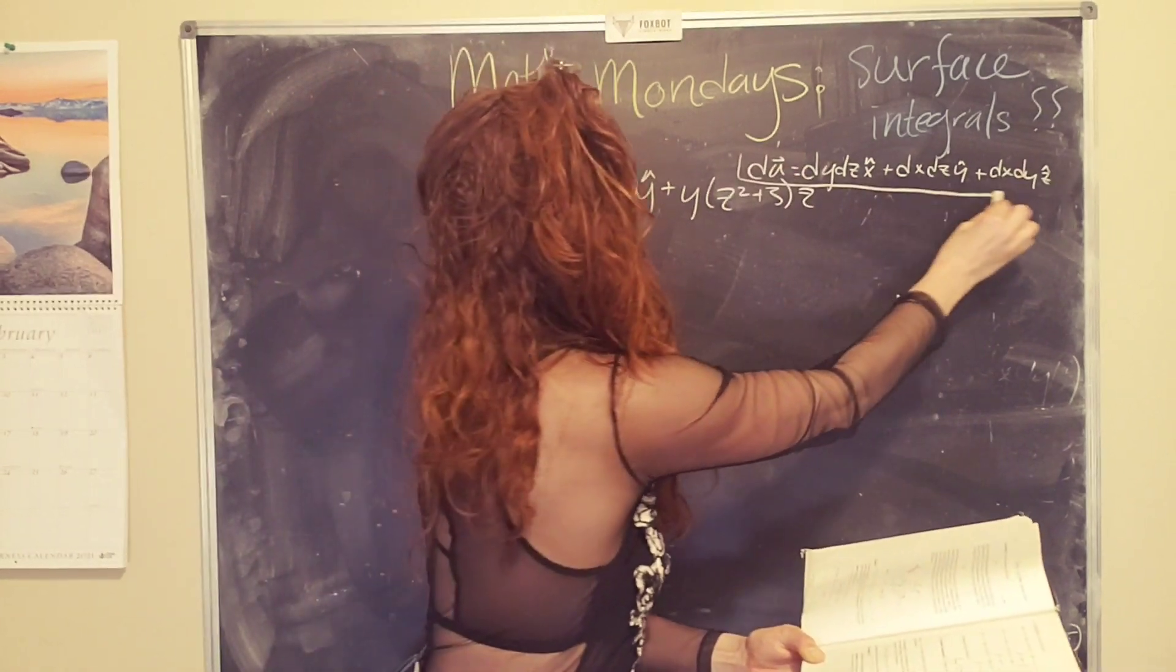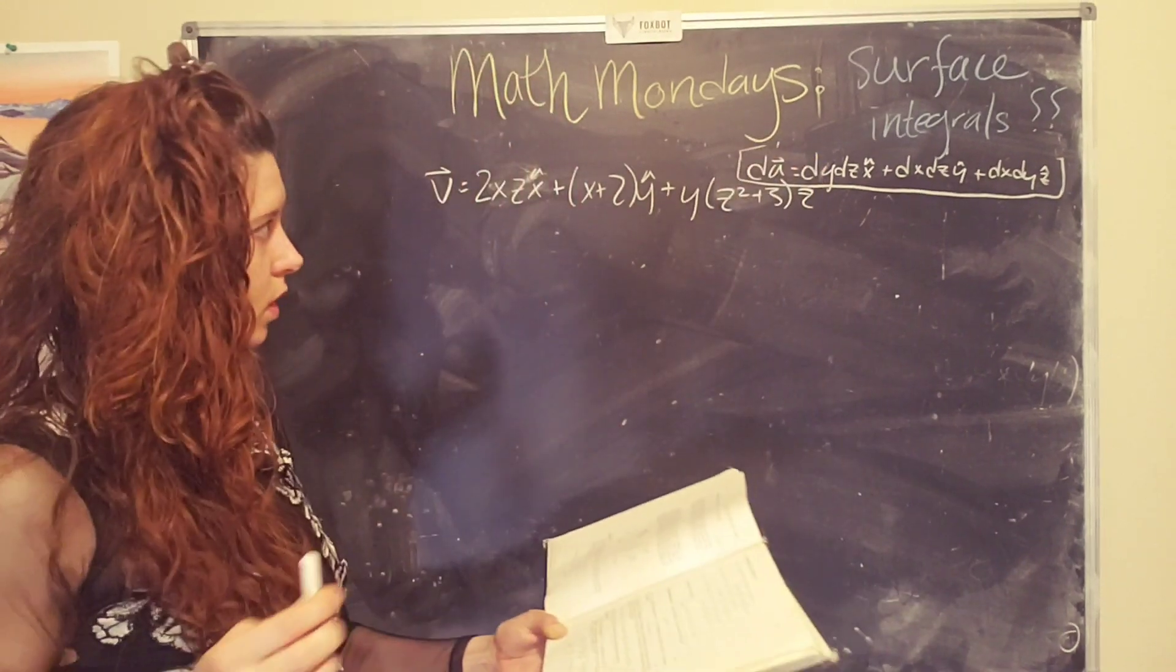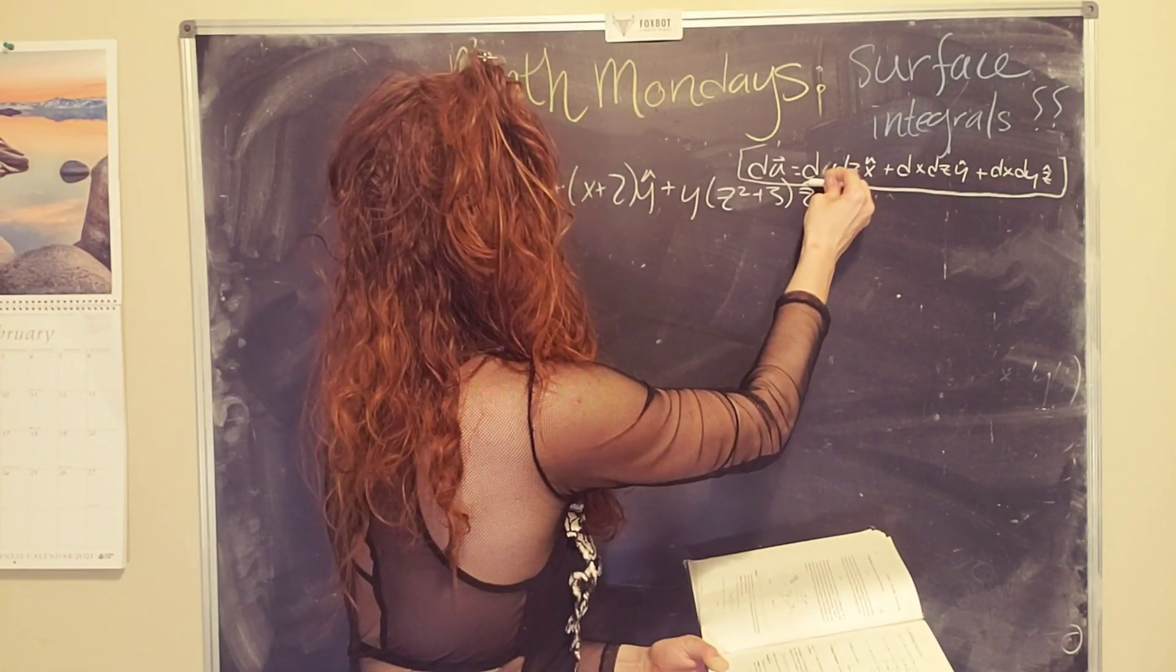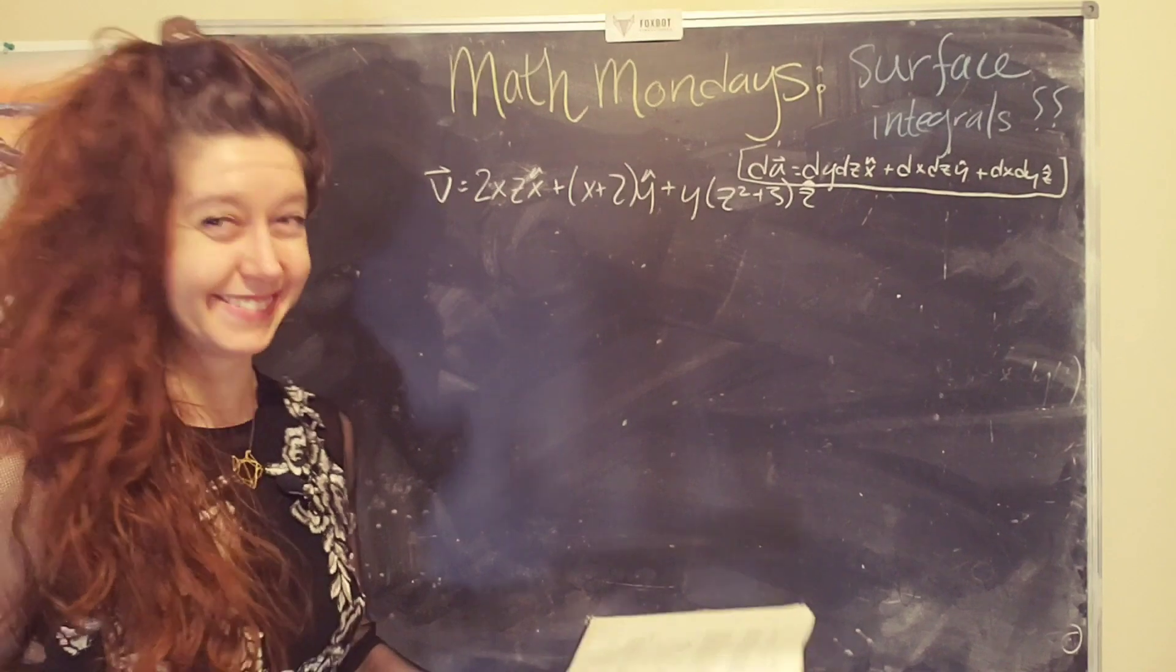So v equals 2xz x hat plus (x + 2) y hat plus y(z squared + 3) z hat. Oh, this gets it somewhat a boxy thingy. Okay, cool. Oh, I lost my little hat. That's a hat on the z. Okay. Very nice hat.